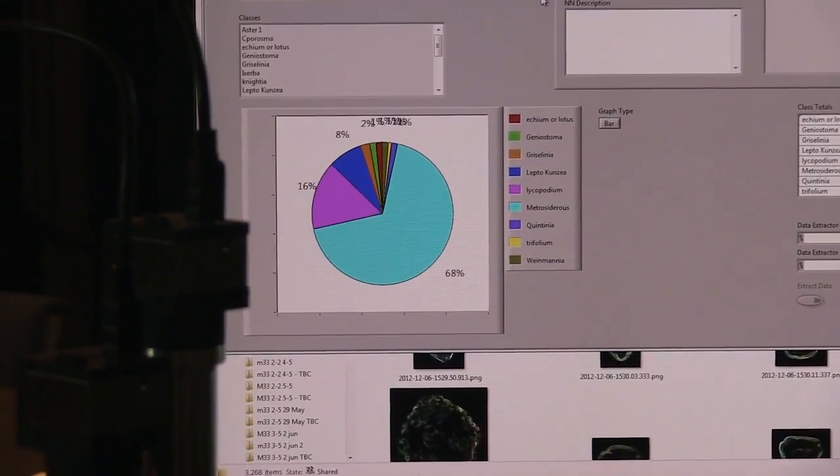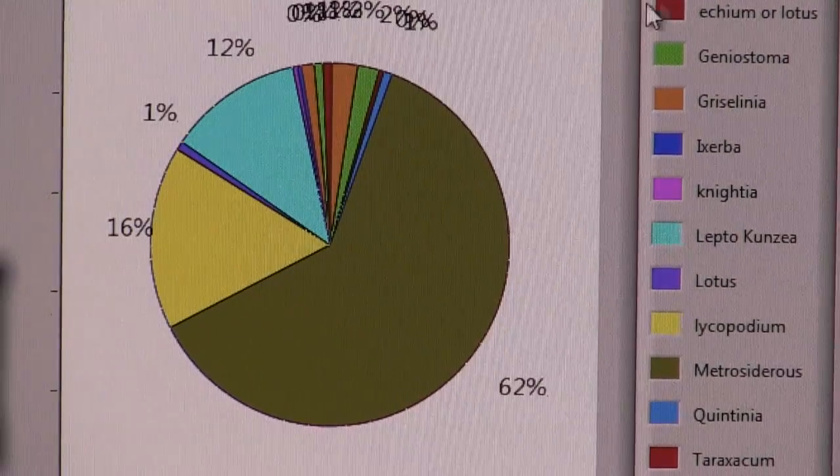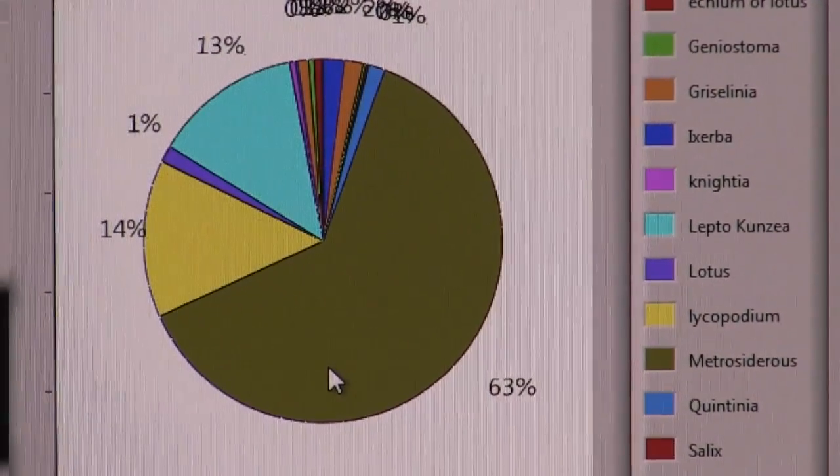And there you can see the system progressively classifying the pollen types in that set with the pie chart constantly adjusting to show the proportions of the taxa as they're identified.